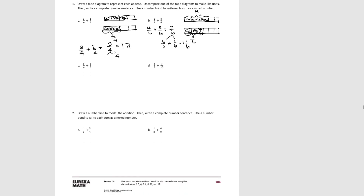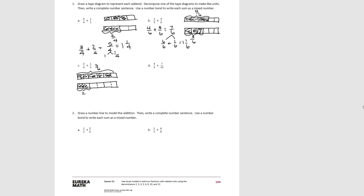Try C. We start with 5/6, so we'll divide into 6ths and shade 5 of them. Our second tape diagram is in thirds, and we have 1/3. To add them, we decompose the thirds into 6ths, giving 2/6. So 5/6 plus 2/6 is 7/6, which equals 1 and 1/6.